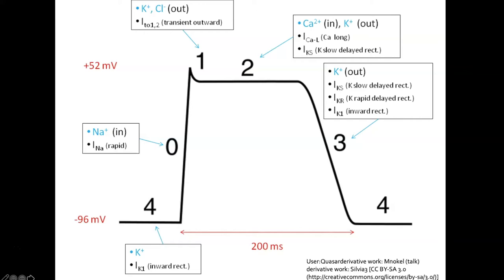We have electrical impulses going to cardiac cells. The electrical impulse stimulates that cardiac cell to change from a negative state of minus 96 millivolts up to a positive state of positive 52 millivolts, primarily because of sodium rushing in. Then we have a plateau state with some exchange of ions including calcium, and then we start pushing potassium out as we repolarize.